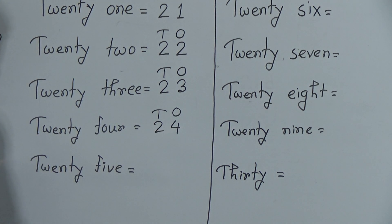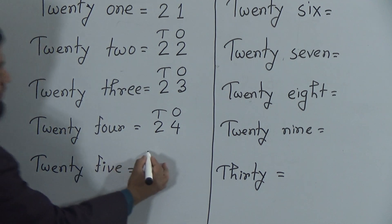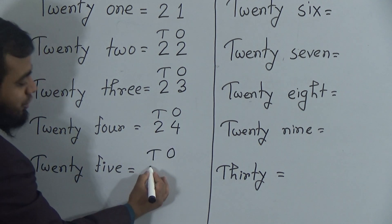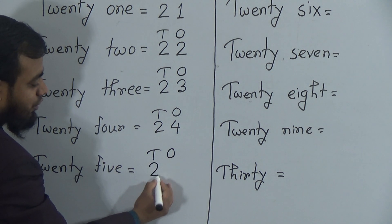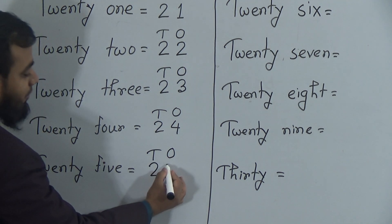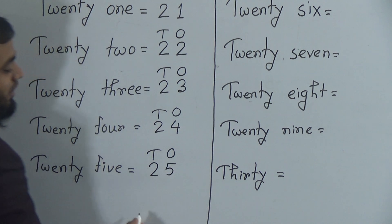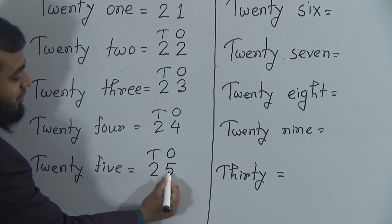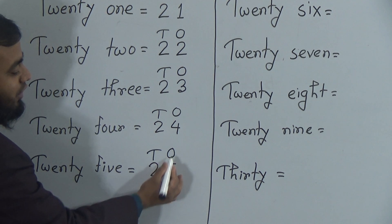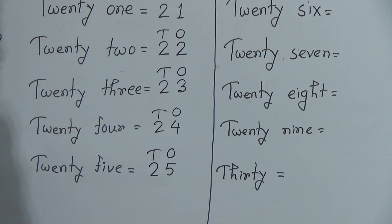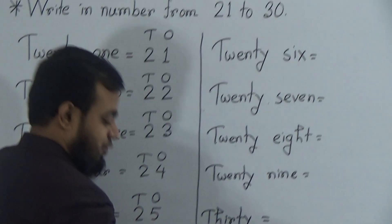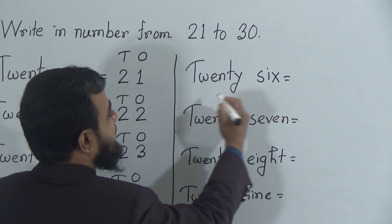The next number is twenty-five. To write down twenty-five, we write two in the tens position and five in the ones position. Two and five makes twenty-five — two tens and five ones makes the number twenty-five. Our next number is twenty-six. Look at 26.